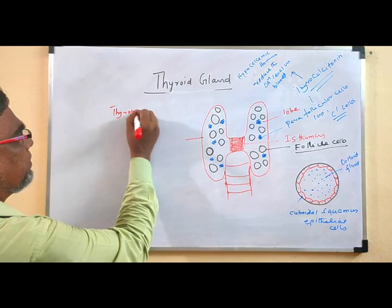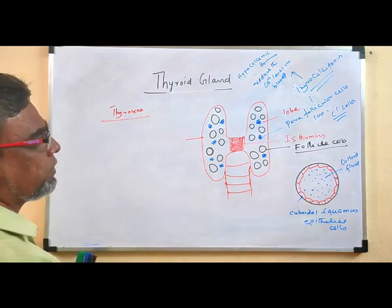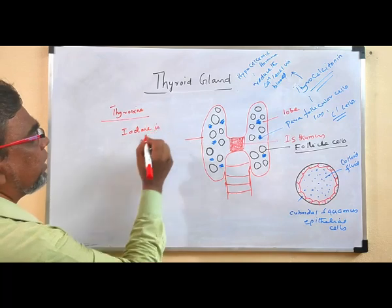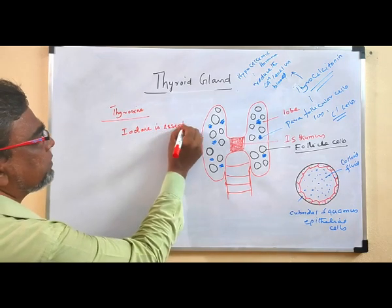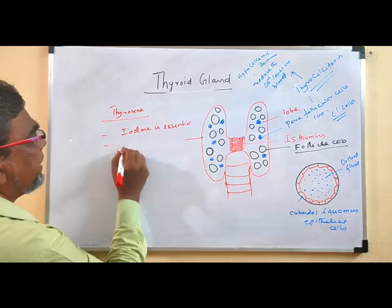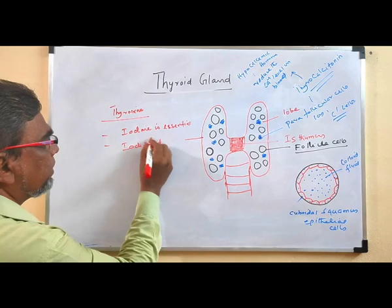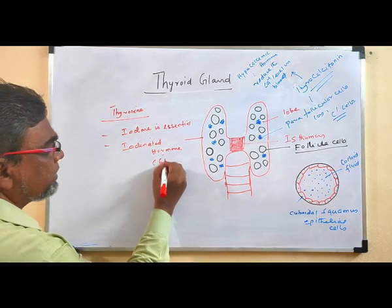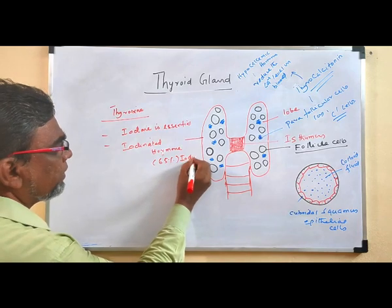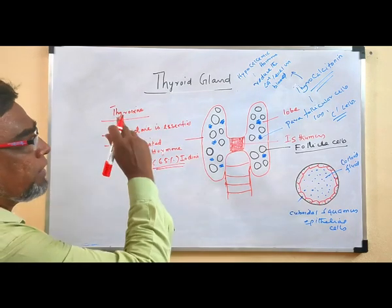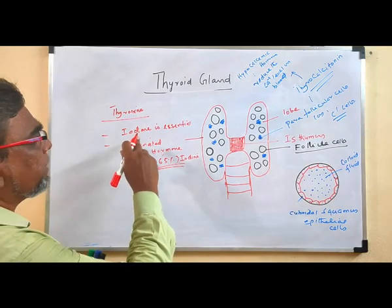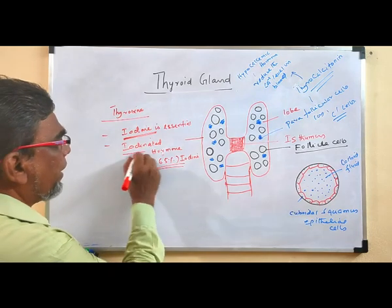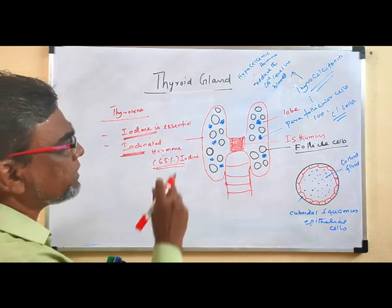The thyroid gland secretes thyroxine. For synthesis of thyroxine, iodine is essential — it is an iodinated hormone. Approximately 65 percent of iodine is present in thyroxine. Thyroxine is synthesized inside the thyroid gland.